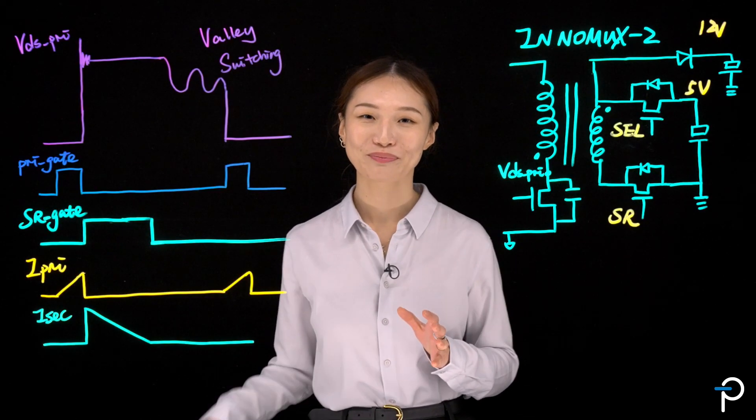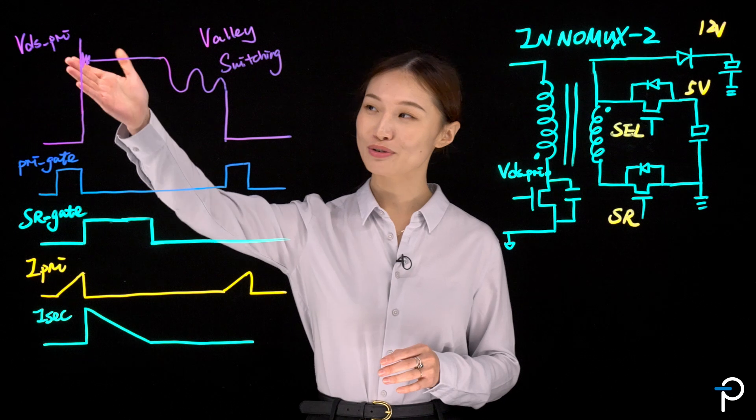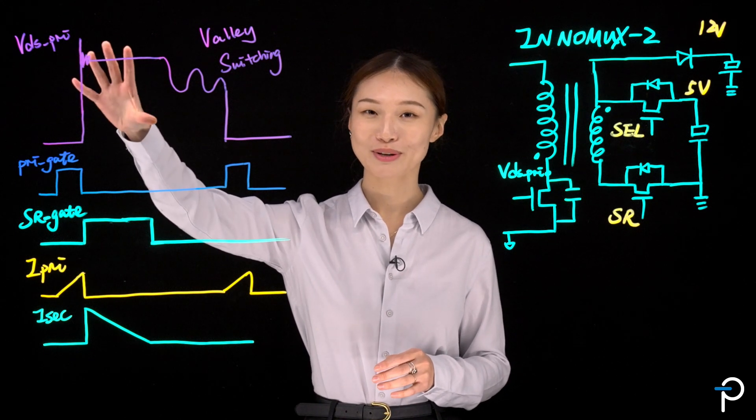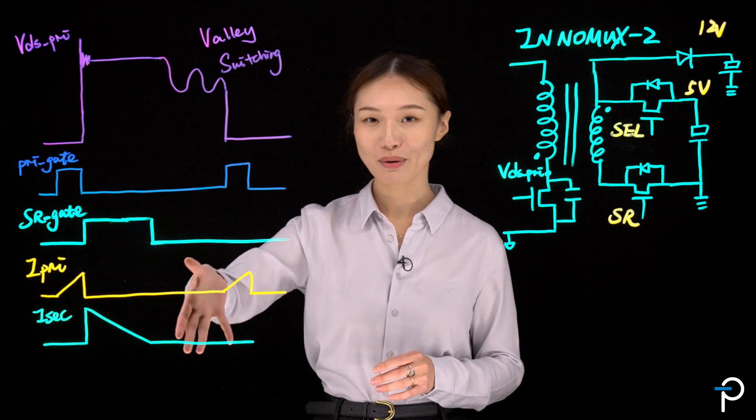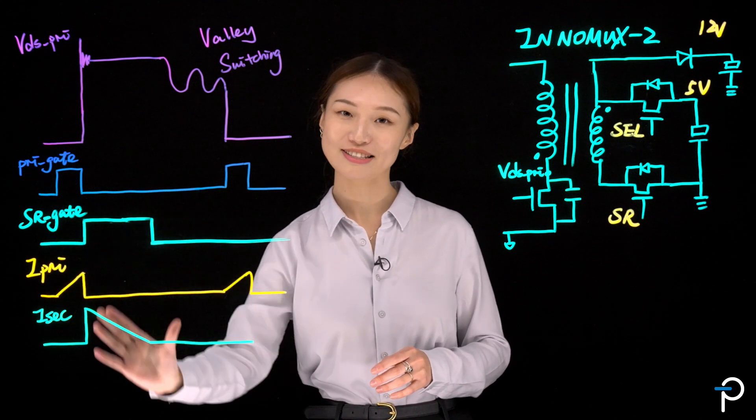Let's have a look at some waveforms. Over here, first of all, I have the drain-to-source waveform of the primary switch and the gate of it. And I also have the SR gate, the current waveforms, primary current and secondary current.